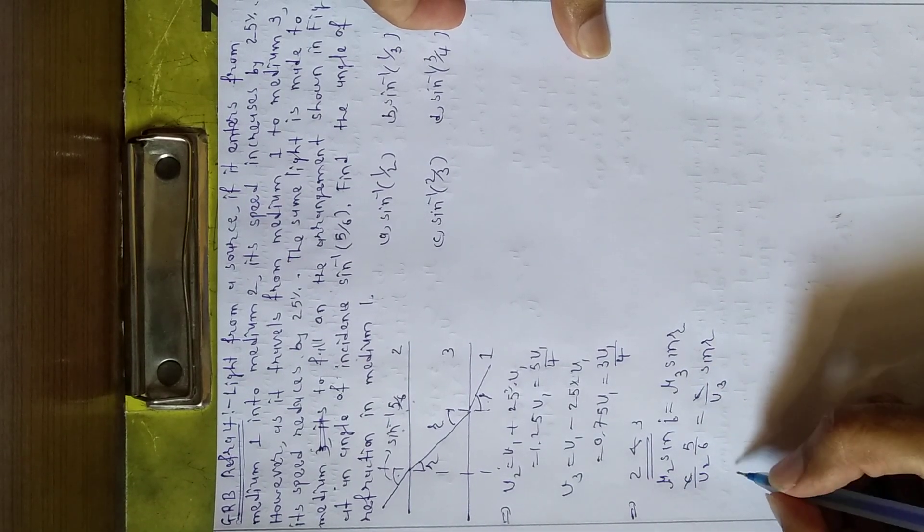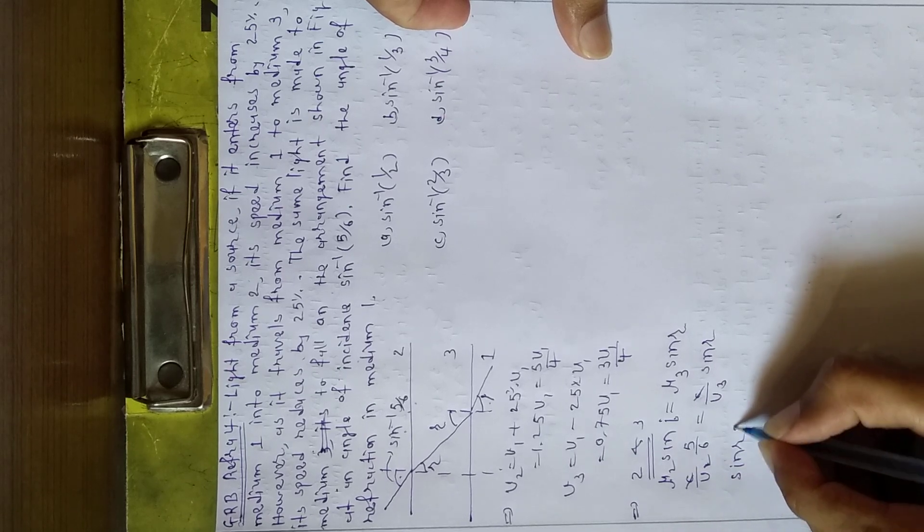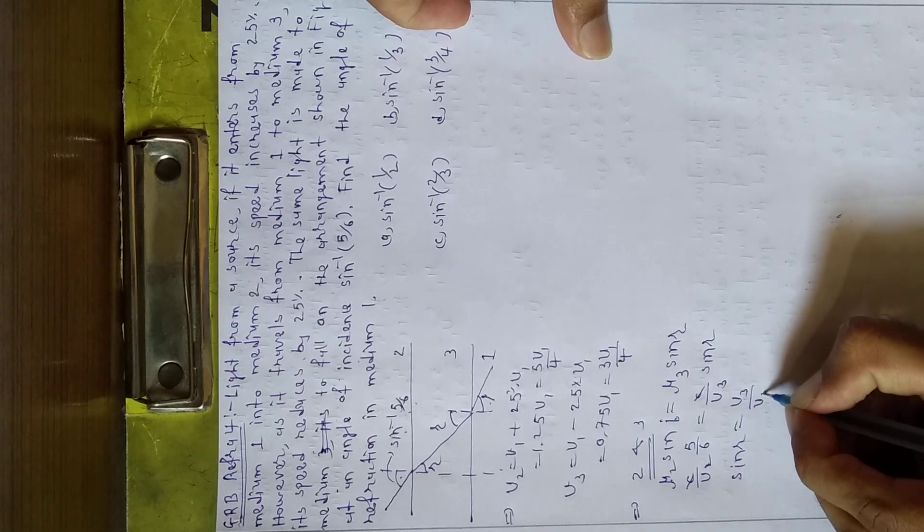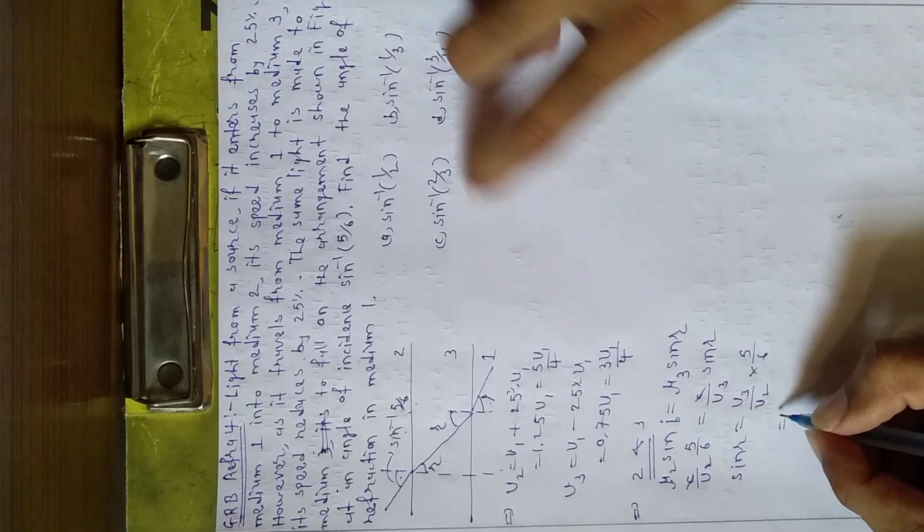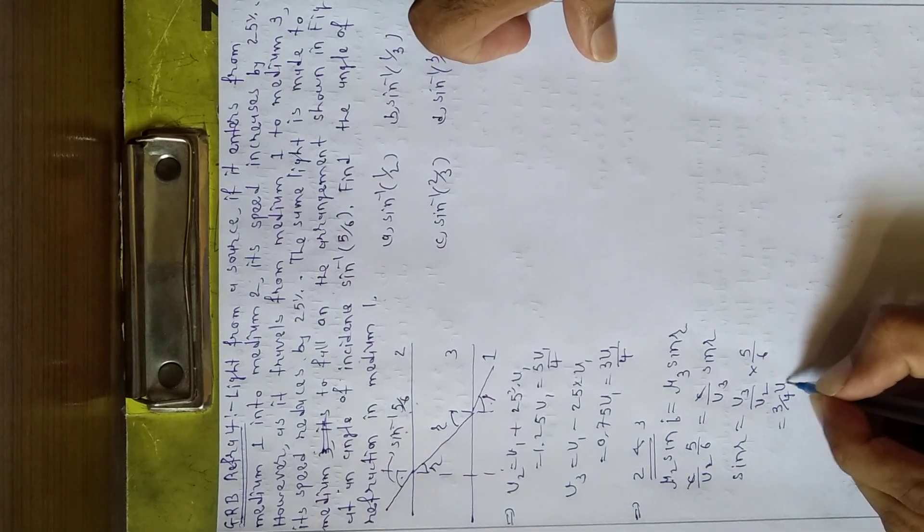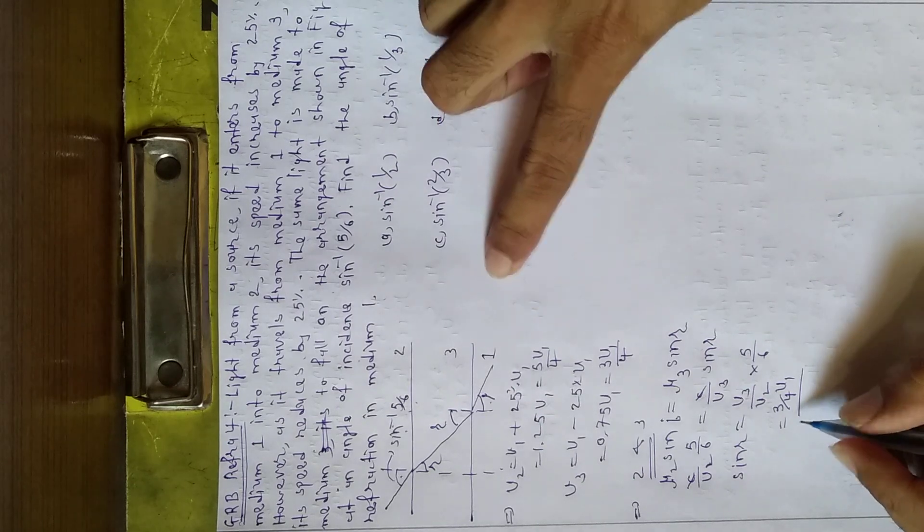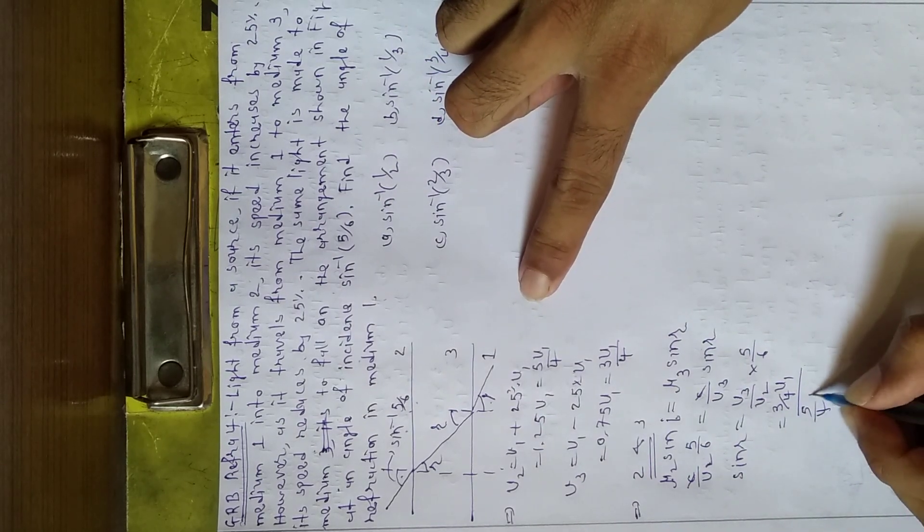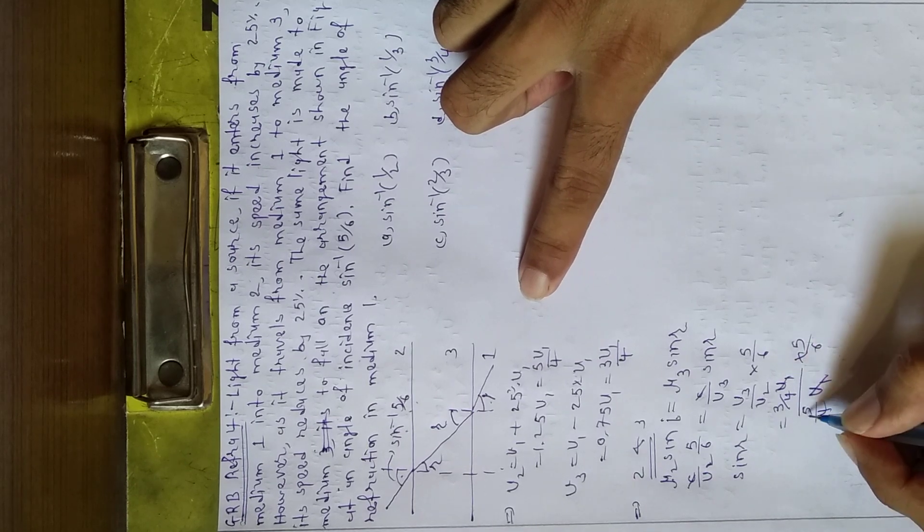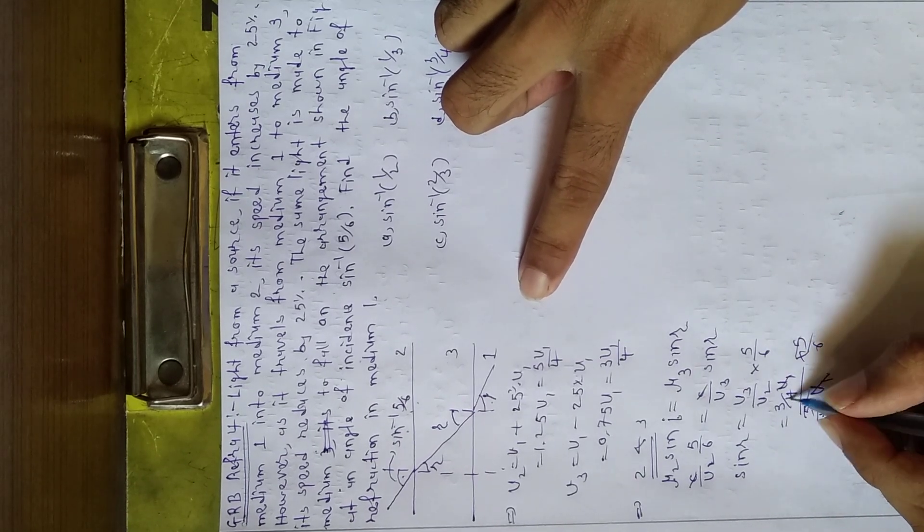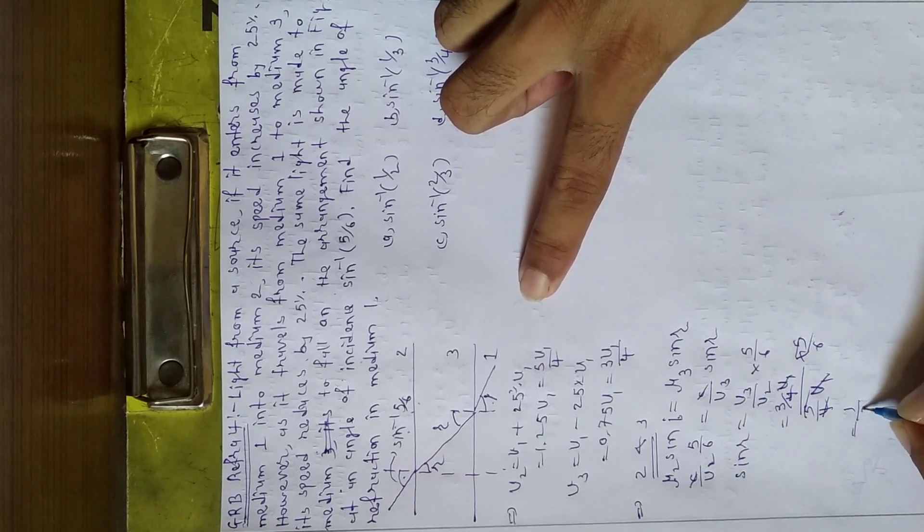now here, sin r equals v3 by v2 into 5 by 6. V3 equals 3 by 4 v1 and v2 equals 5 by 4 v1, into 5 by 6. V1 cancels, 5 cancels, 4 cancels. Sin r equals 1 by 2.